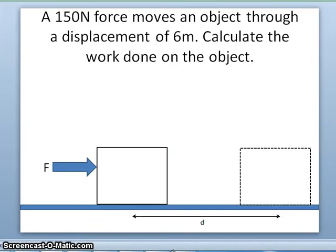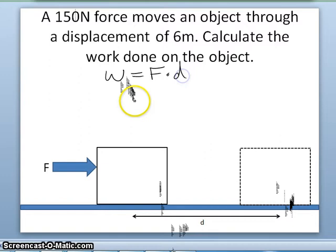Let's do some practice problems. If I have a 150 newton force and I applied it as shown below to move this box 6 meters, I will have applied a force of 150 newtons to the box over 6 meters. If we take out our equation that work is equal to force times distance, we can find the amount of work done on this box.